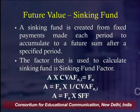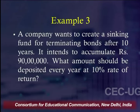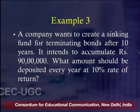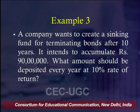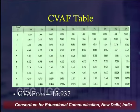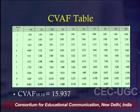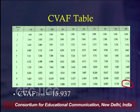Example: A company wants to create a sinking fund for terminating bonds after 10 years, accumulating rupees 90 lakh. What amount should be deposited every year at 10 percent rate of return? From the CVAF table, the intersection of 10 years and 10 percent gives a CVAF value of 15.937.